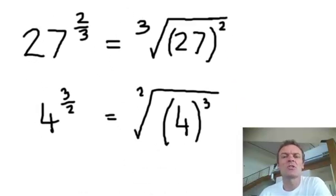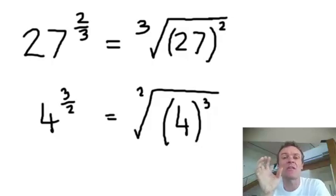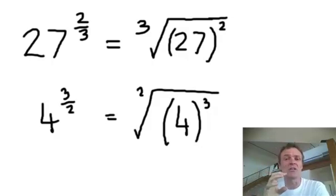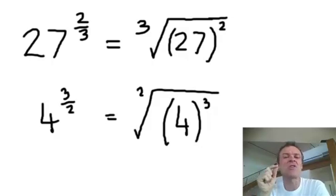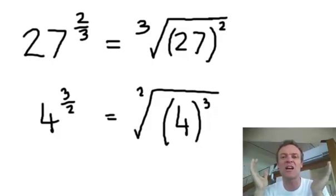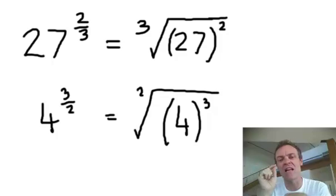How about if I want to know what 27 to the power 2 thirds is? That means I've got a 27, I'm going to square it because that's what the 2 is, and I'm going to cube root it because that's what the 3 is on the bottom. Now, I'd rather not square a 27 first — that's huge. Then I've no idea what the cube root of that huge number is.